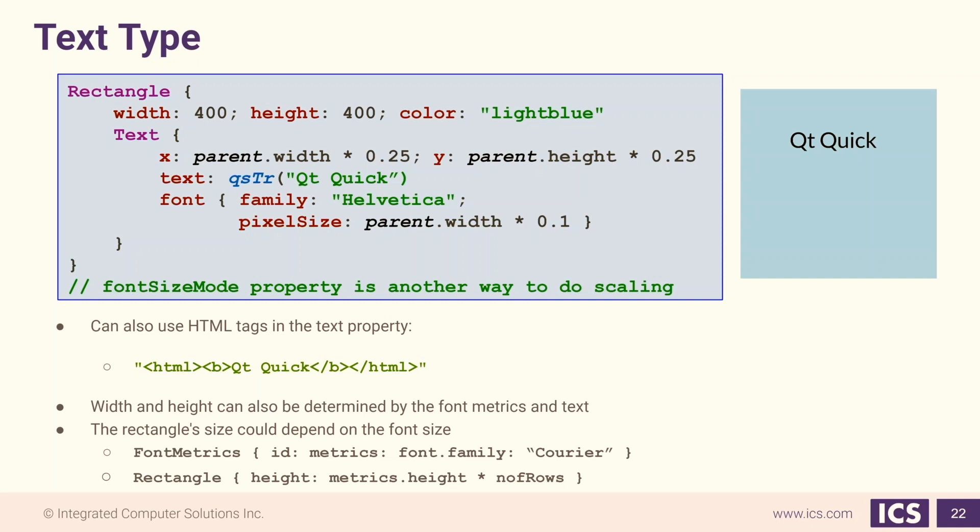One thing we have to often consider when we use the text item is what size the text itself should be. We have a couple options. We can use the font point or pixel size to set a point or pixel size. We can additionally set a font size mode to tell it how it should adjust. And we can also use the painted width and painted height to determine the rendered height and width of the text once it's on screen.